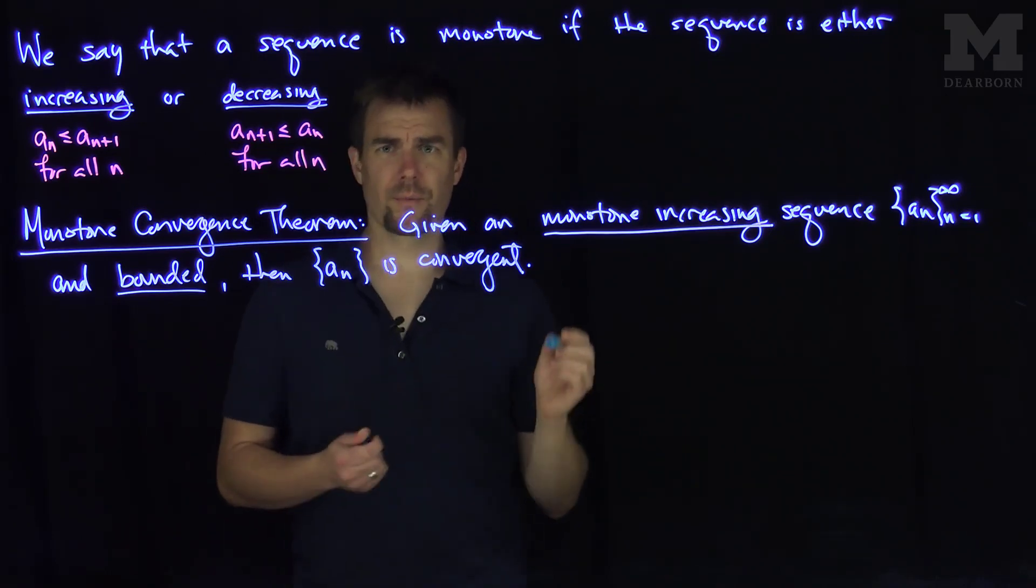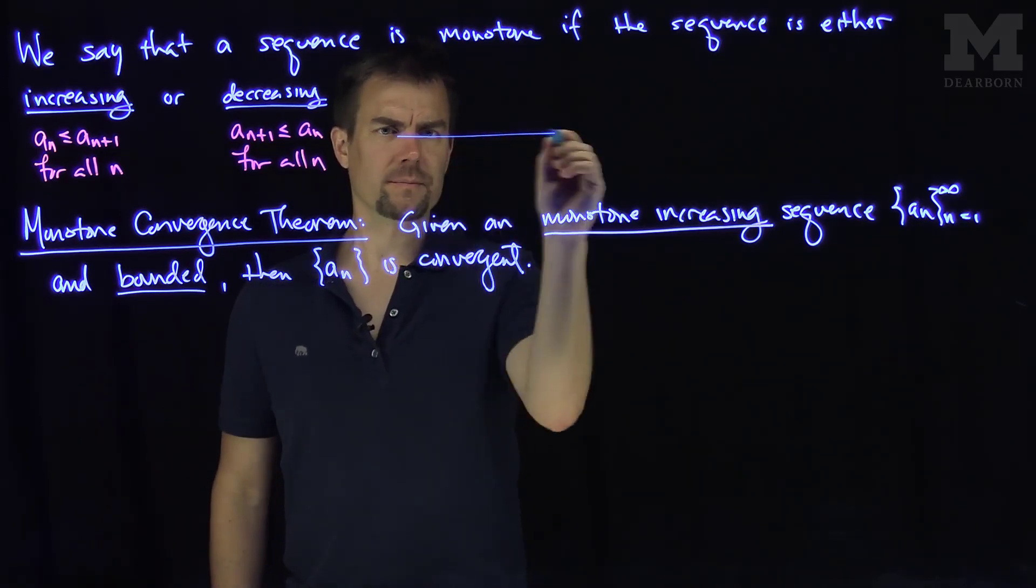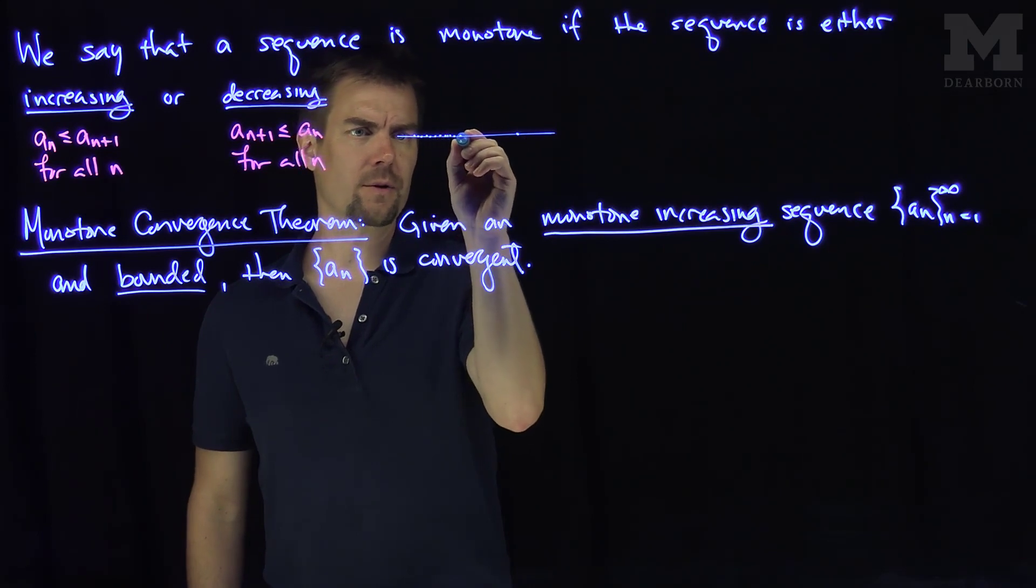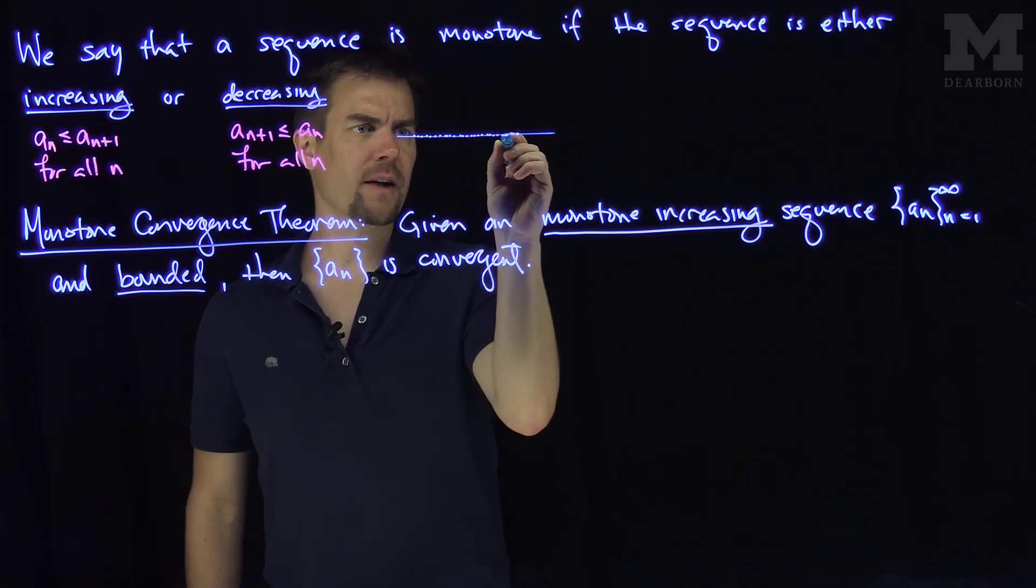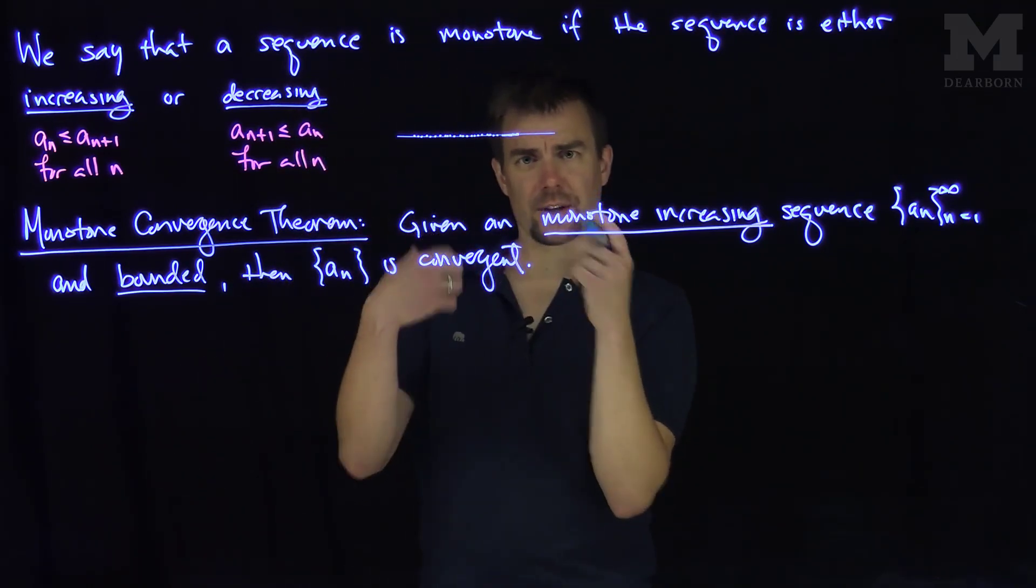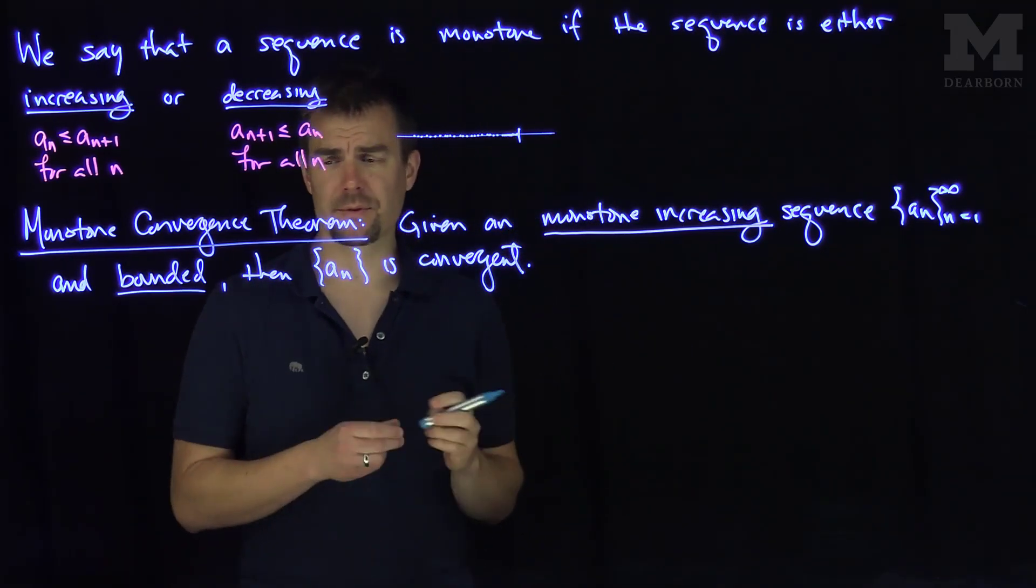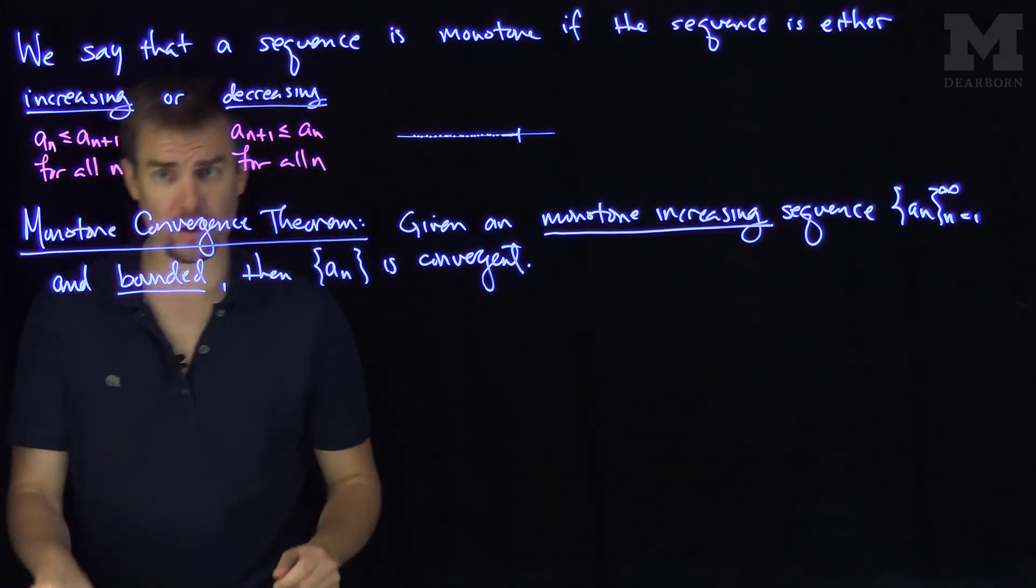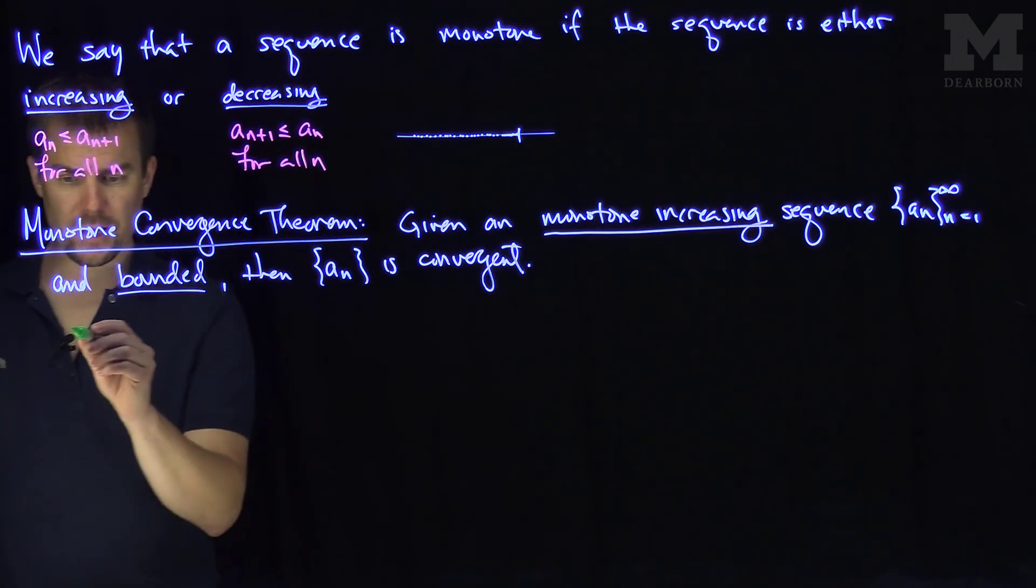That should make intuitive sense. If we have a sequence that's increasing but can never reach a certain bounded point, that sequence sort of crashes into that upper limit point. We're going to use some foundational tools about real numbers from our course and the construction of the real numbers.